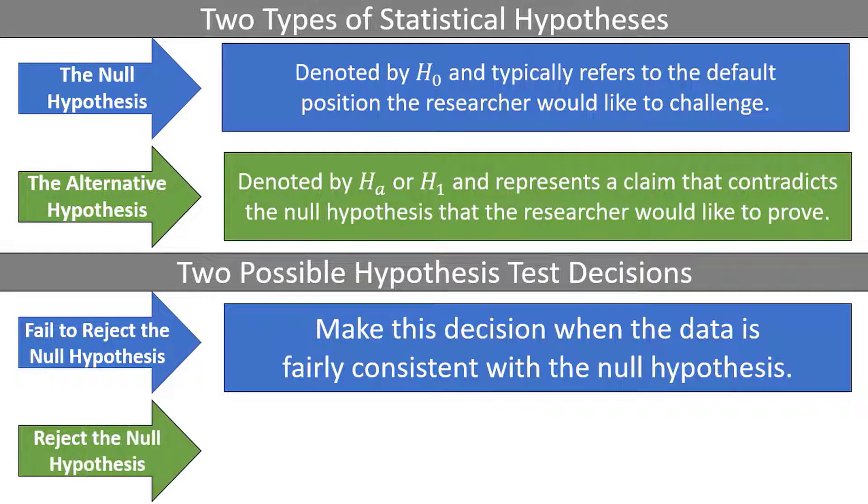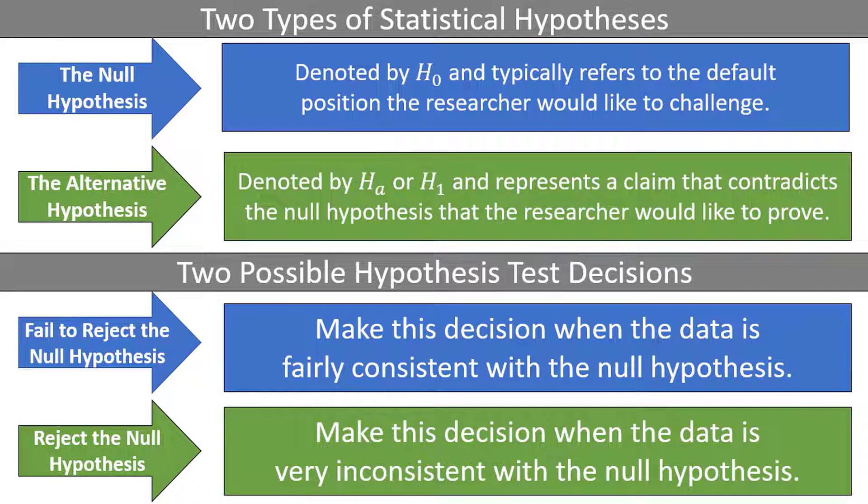We reject the null hypothesis in favor of the alternative hypothesis when the data is very inconsistent with the null hypothesis. This doesn't mean that the alternative hypothesis is certainly correct, it just means that our current data suggests that the alternative hypothesis is likely correct. New data might come later in the form of more studies to reaffirm the alternative hypothesis, or perhaps it might be disproven. The phrases fairly consistent and very inconsistent are a bit loose here, and we end up making our final decision based on probabilities, which we will discuss in more detail in future videos.